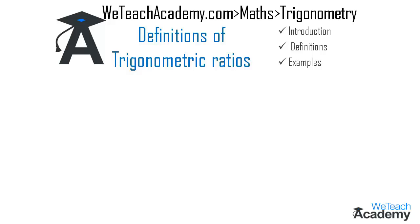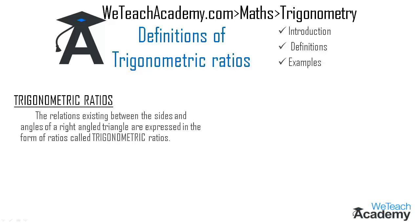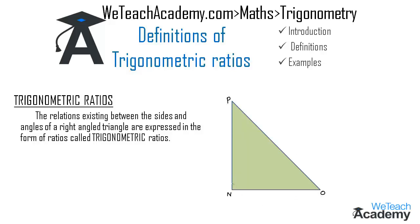The relation existing between the sides and angles of a right angle triangle are expressed in the form of ratios called trigonometric ratios. Here we have a right angle triangle PNO, right angled at vertex N, with angle theta at vertex O. Let us name the sides of the triangle: ON as x.